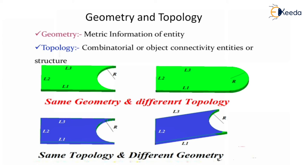So geometries are the same — L1, L2, L3, and radius R values are the same in both geometries — but what is different is topology, meaning the orientation is different. In the next case, there is the same topology but different geometry. In the second figure in blue, L1, L2, L3, and R have the same length, but L1 is shifted at a certain angle, so the length of L1 and L3 change slightly — that is a geometry change, while topology remains the same.